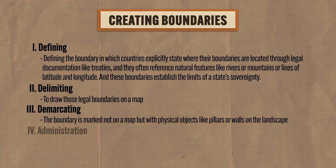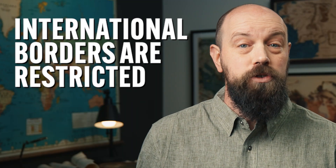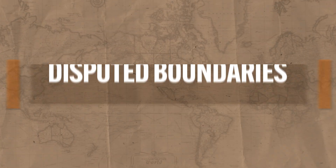Now the fourth phase is the administration of the boundary, which describes all the measures that states use to enforce that boundary. It wouldn't be much good to go through all that trouble to define and demarcate boundaries if states didn't also make sure that those lines were respected. So that means for most countries, international borders are restricted — you can't just go in and out of these boundaries for fun. You typically need some kind of government permission or documentation like a passport or a visa.